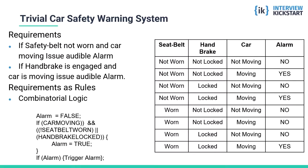Let's now look at another example — a trivial car safety warning system. The requirements are simple: first, if the safety belt is not worn when the car is moving, an alarm should sound. Similarly, if the handbrake is engaged and the car is moving, the alarm should be sounded. This can be seen as a simple set of rules, and one can implement them using combinatorial logic. A naive and direct approach would code the rules as a set of conditional statements using an if-then-else structure, one for each requirement.